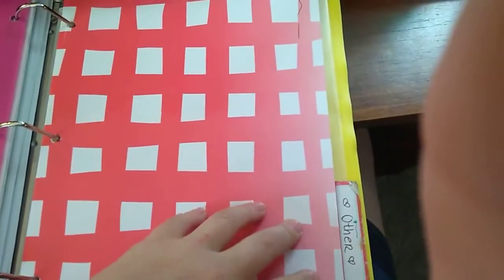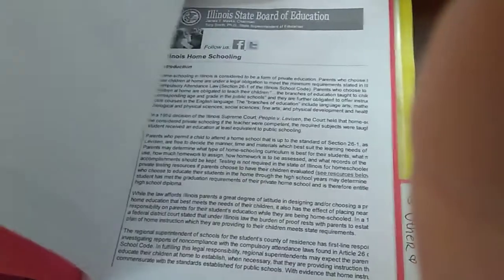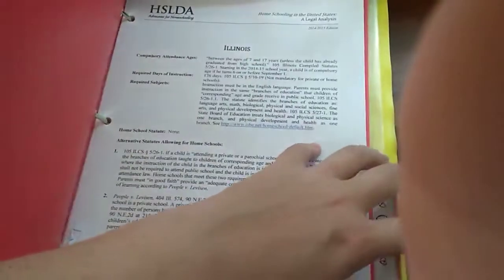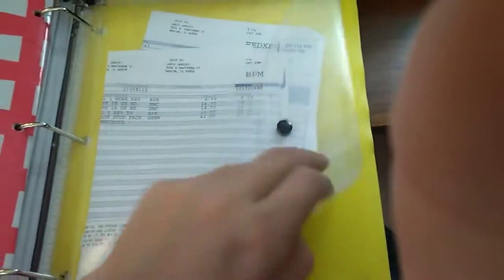This is our other tab, which is for all of our homeschool laws. These actually need to be updated. This is all of our homeschool laws for our state, and then I have a little pouch in the back where I keep my book receipts.